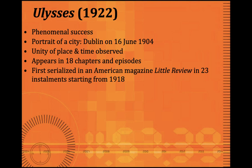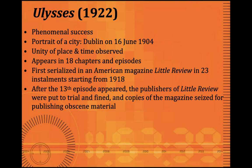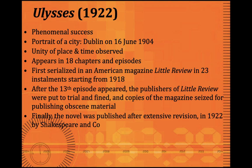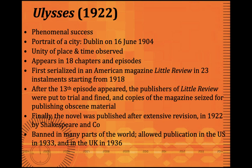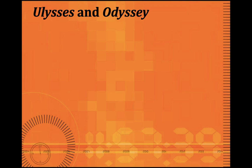Ulysses was first serially published in the American magazine Little Review in 23 installments starting from 1918. For the first 13 installments authorities paid no attention, but after the 13th episode the publishers of Little Review were put to trial and fined because the unconventionality of the novel came to notice. Copies of the magazine were seized for publishing obscene material. It was famously banned in both the US and UK. Finally the novel was published in book form after extensive revision in 1922 by Shakespeare and Company. The ban was lifted in the US only in 1933, and in the UK in 1936.